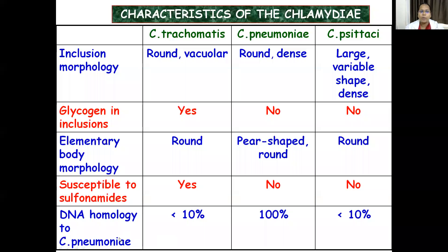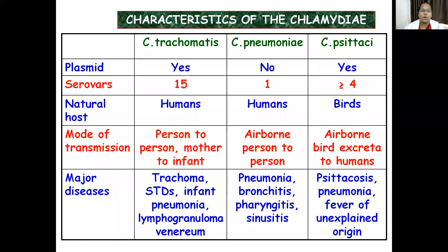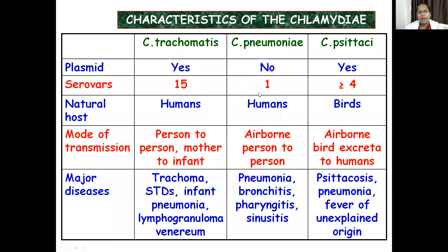DNA homology to C. pneumoniae: C. trachomatis is less than 10%, C. pneumoniae is 100%, and C. psittaci is also less than 10%. Plasmids are seen in C. trachomatis but not in pneumoniae or psittaci. Serovars: 15 for C. trachomatis (A, B, Ba, C, D–K, L1, L2, L3); only 1 for C. pneumoniae; 4 or more for C. psittaci. Natural hosts: humans for trachomatis and pneumoniae; birds for psittaci.